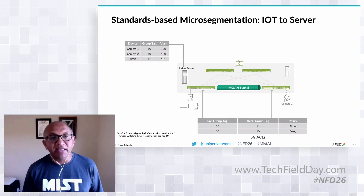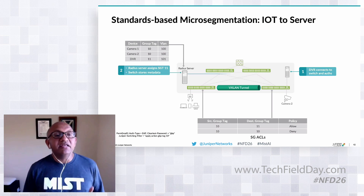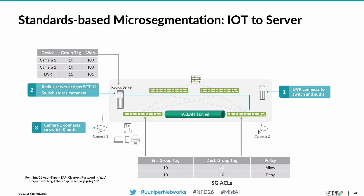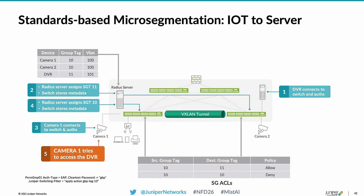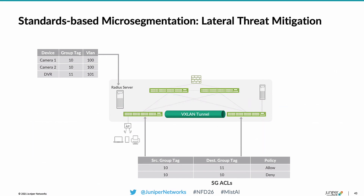Here's an example: a camera gets a tag of 10, a second camera also gets tag 10, and the RADIUS server assigns a tag of 11 to the DVR. When the camera connects to the switch, that same tag is downloaded onto the switch. When the camera communicates with the DVR, we encapsulate the traffic through the VXLAN header, look up the policy to allow or deny the traffic, and can detect and drop it accordingly.